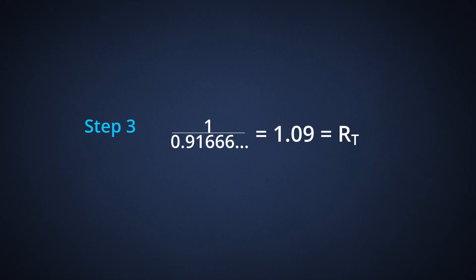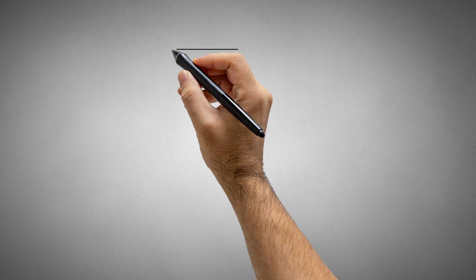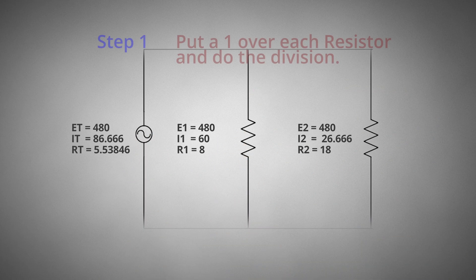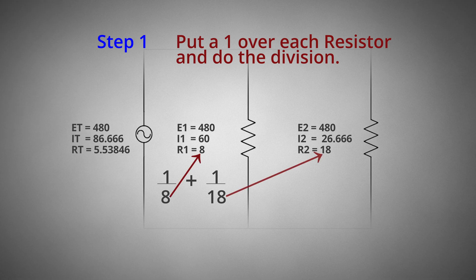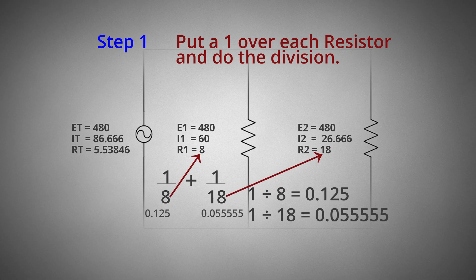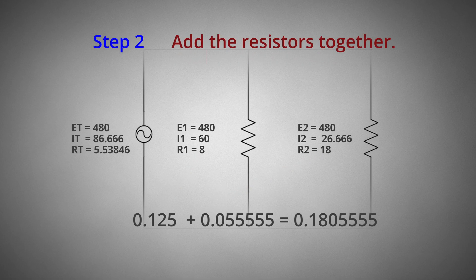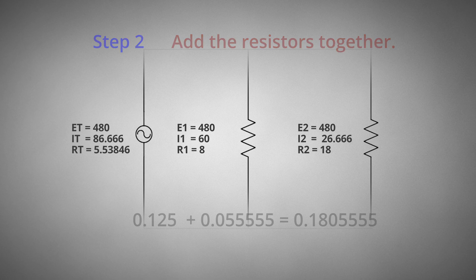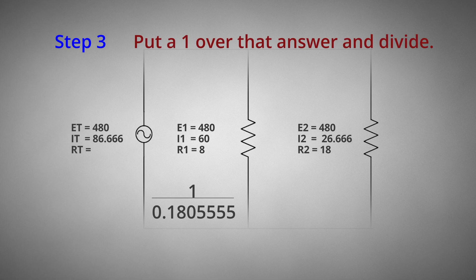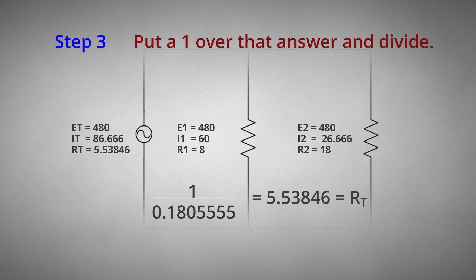Calculating total resistance in a parallel circuit is just that easy. Let's review to make sure you've got it. Step 1: put a 1 over each resistor and do the division — 1 divided by 8 equals 0.125, plus 1 divided by 18 equals 0.055555. Step 2: add those together — 0.125 plus 0.055555 equals 0.1805555. Step 3: put a 1 over that answer and divide — 1 divided by 0.1805555 equals 5.53846 as total resistance.